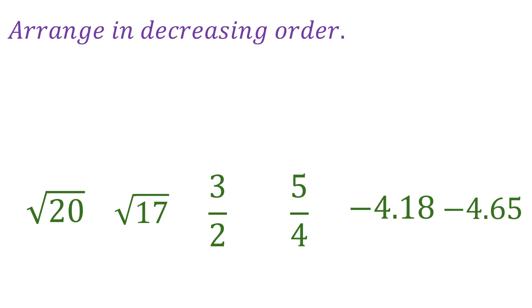Remove the decimal conversions and the numbers are now arranged in decreasing order — the biggest being square root of 20 and the smallest being negative 4.65. That's how you arrange real numbers in increasing or decreasing order. I hope you learned from this video — please do subscribe to my channel.